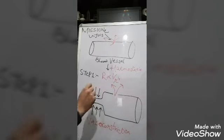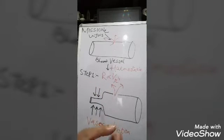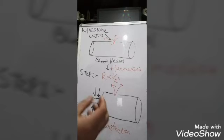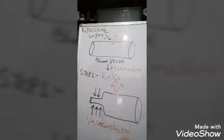This is the first step in hemostasis: vasoconstriction occurs, the blood vessel narrows, resistance to blood flow increases, blood flow to the injury site decreases, and consequently bleeding decreases.